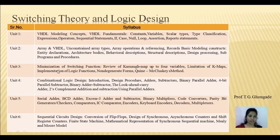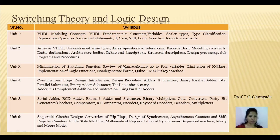Unit number 3 is minimization of switching functions. In this unit, we mainly focus on minimization or reduction of switching functions, because the smaller the function or expression, the easier it is to design a circuit. We will see different techniques for minimization, including K-map, which is one technique for minimization up to 4 variables, as well as the limitations of K-map, implementation of logic functions, and the Quine-McCluskey (QL) method.